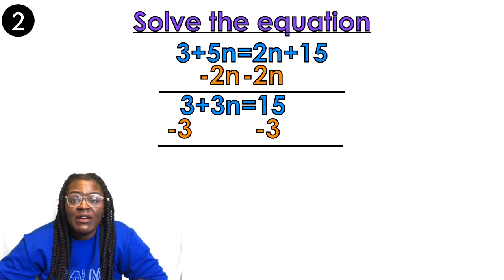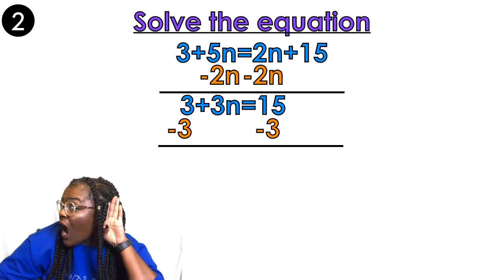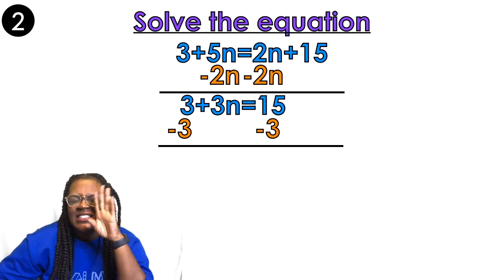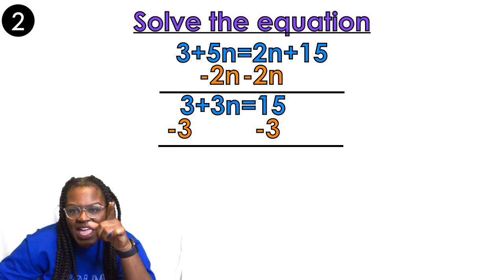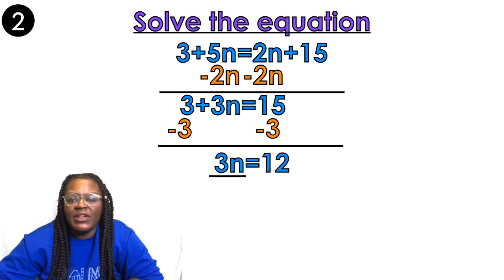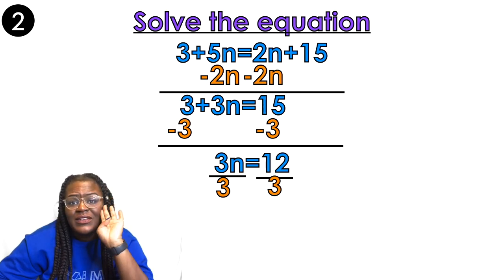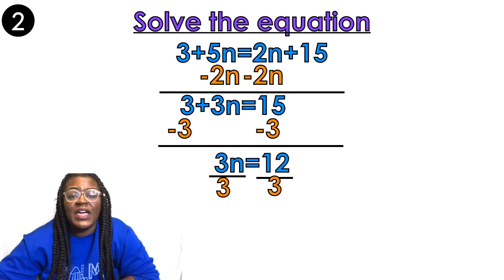Now I need to get rid of my coefficient. The coefficient is there by multiplication, so to get rid of multiplication I divide. I'm going to divide by 3 on both sides, and n equals 4!